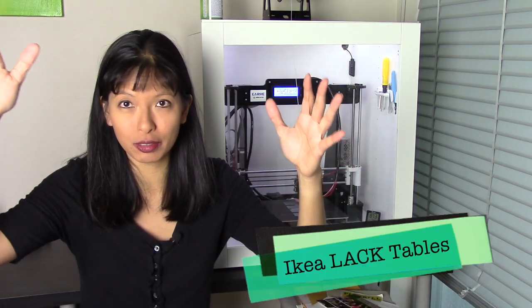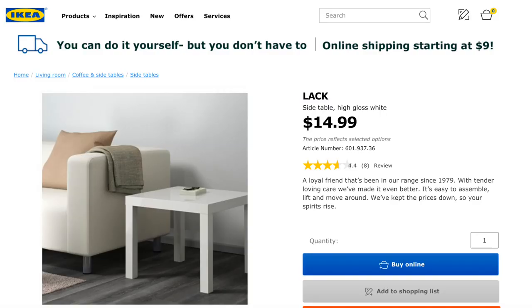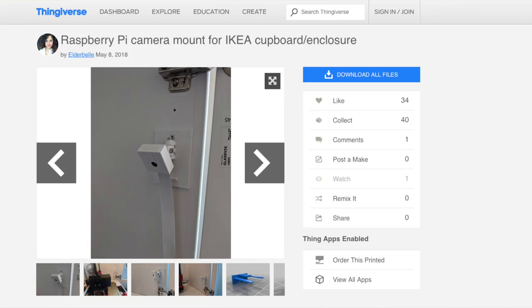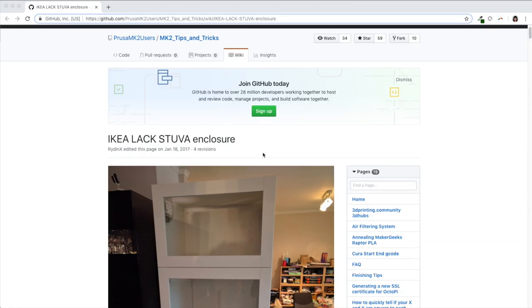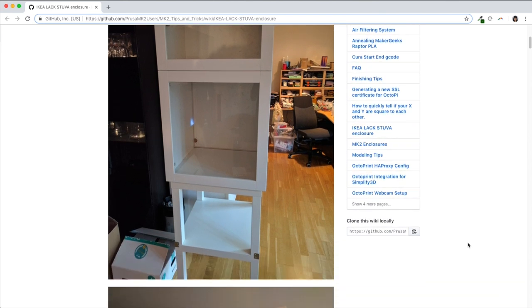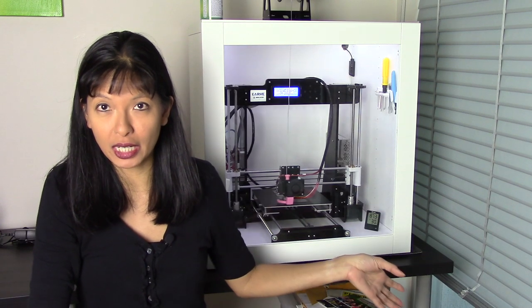It was a video where he put together two or three Lack tables from the IKEA store. He made a printer enclosure from end tables from the IKEA store. I started just going down that path. As I was going down that path, I was looking on Thingiverse, I was looking at different cameras, and I realized I could use a Stuva cabinet from the IKEA store as my printer cabinet. This particular one is the correct size for an Anet A8.